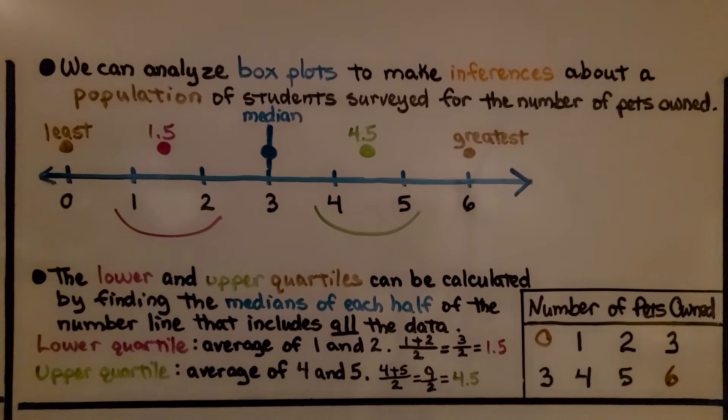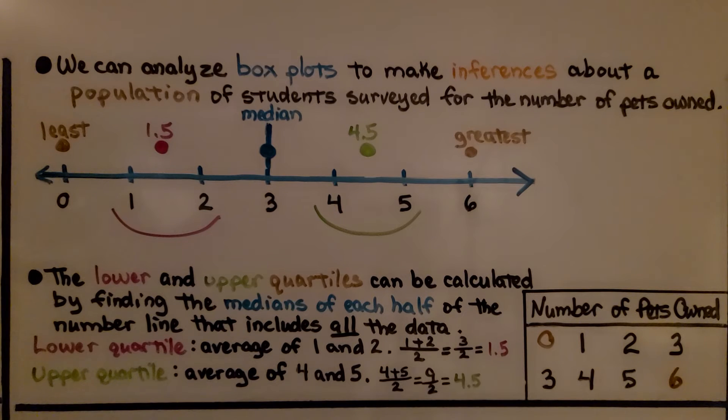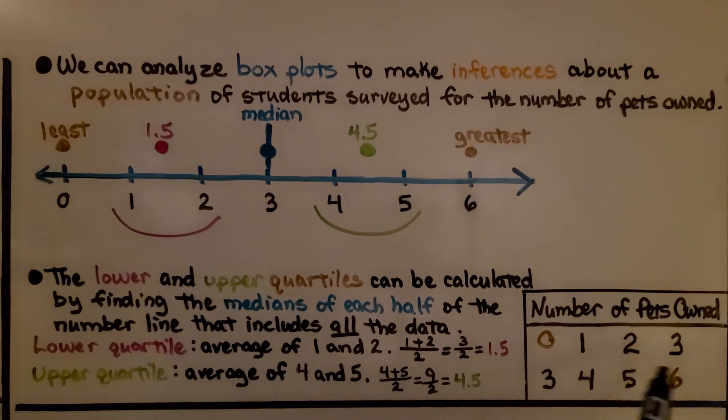We can analyze box plots to make inferences about a population of students surveyed for the number of pets owned. So here's the number of pets owned from the results of the survey. The lower and upper quartiles can be calculated by finding the medians of each half. So the median is going to be 3. We add up all of these and divide it by 8 because there's 8 data values and we got a 3.